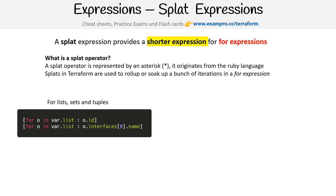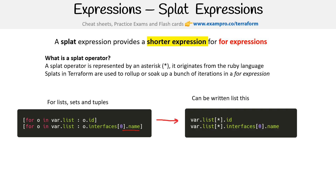Here is an example where it's used for a list, set, or tuple. We have a list, and we're iterating over an array that contains a bunch of objects, accessing the name within it. Instead of writing a for expression, we can put an asterisk here and it equates to the same thing. This will return all the IDs and allow us to access the interfaces down to the name.